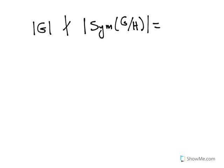For example, let's say that we know that the order of G does not divide the order of the symmetric group on G mod H, which we know is actually just the order of G mod H factorial.